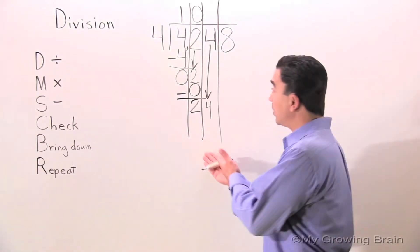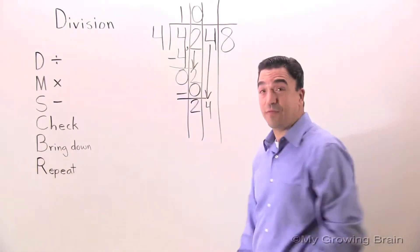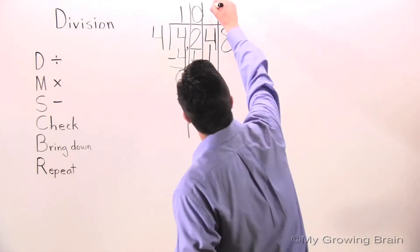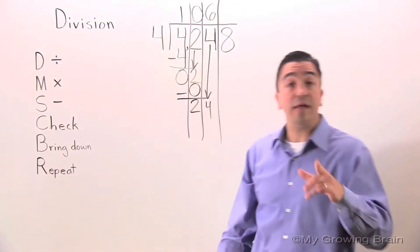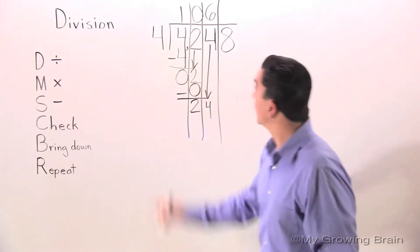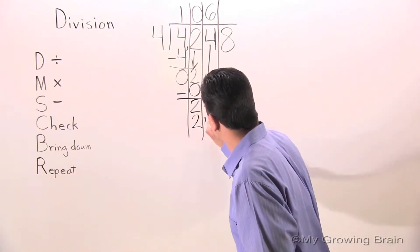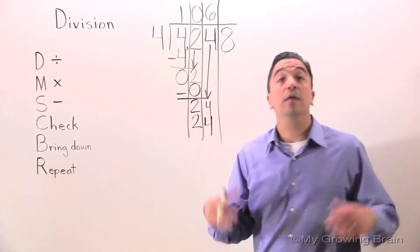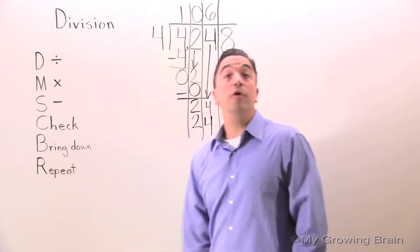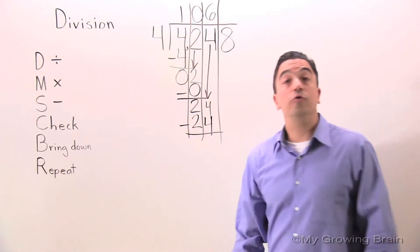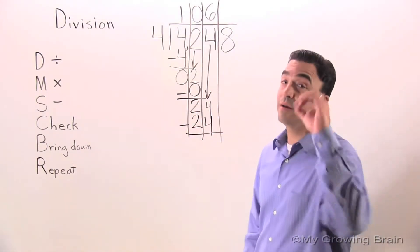Divide. 24 divided by 4, or 4 into 24, 6 times. Next step: multiply. 4 times 6 is 24. Next step: subtract. 24 minus 24 is 0.